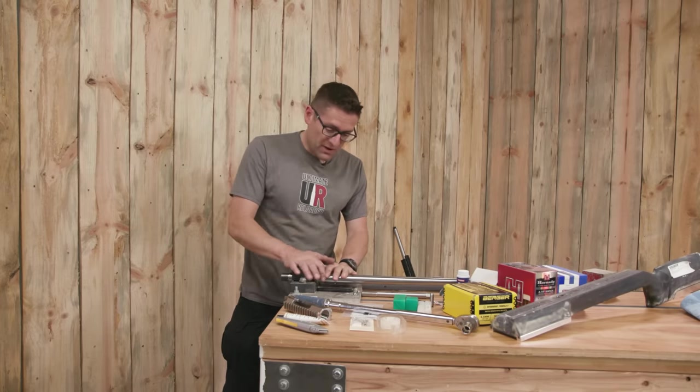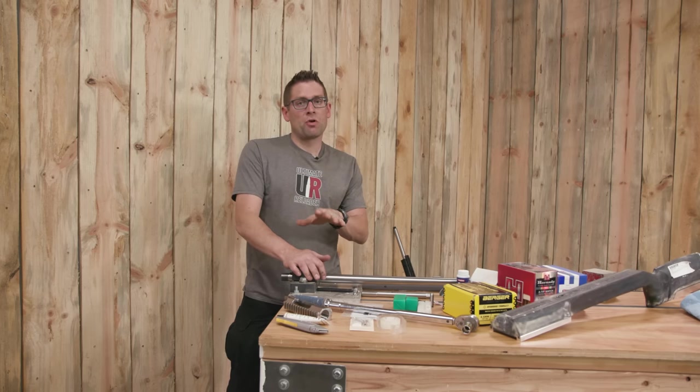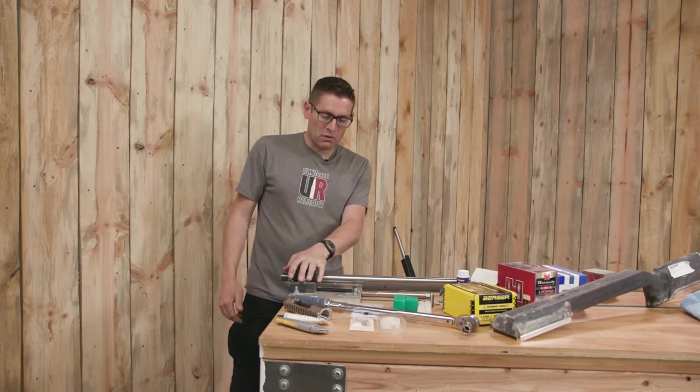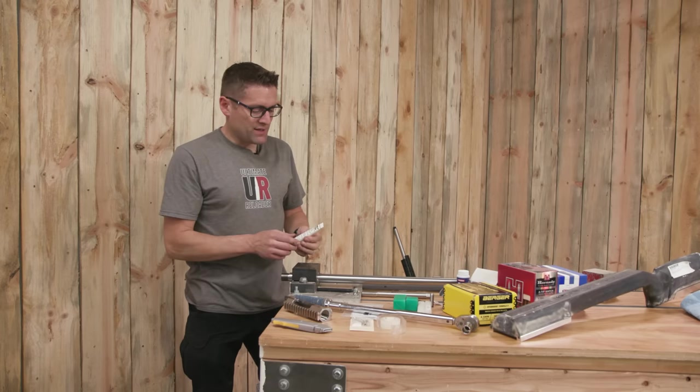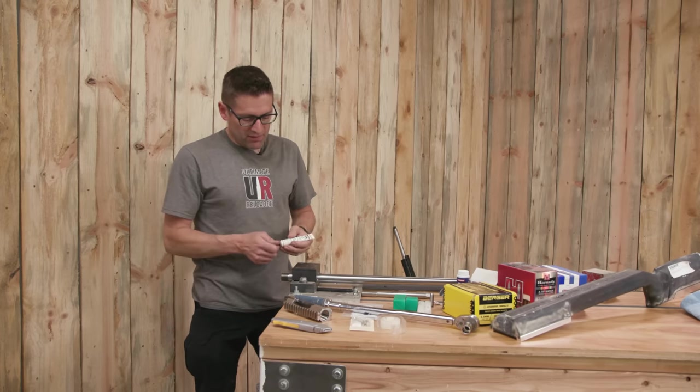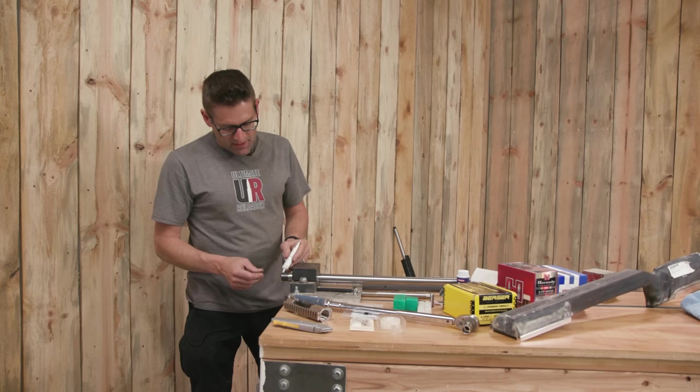So, I got the barrel tightened down really good in this barrel vise. One thing I learned from Gordy Gritters is don't be bashful about torquing these bolts down. You don't want the barrel to spin.